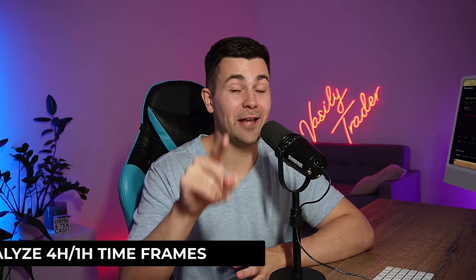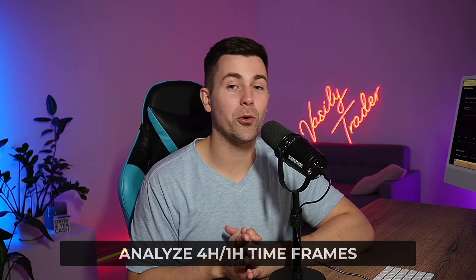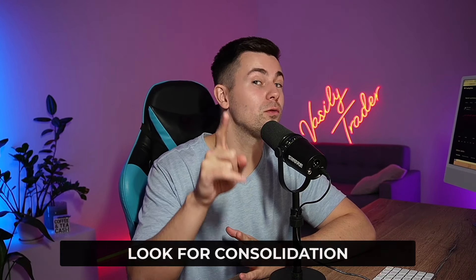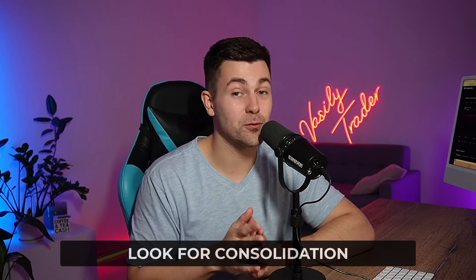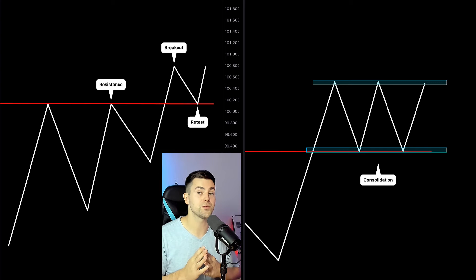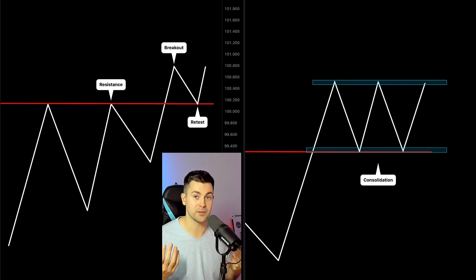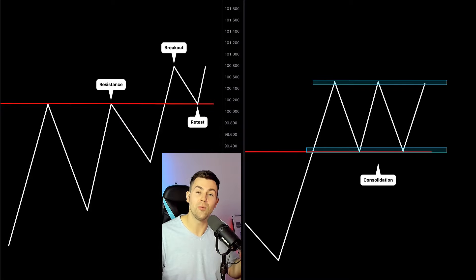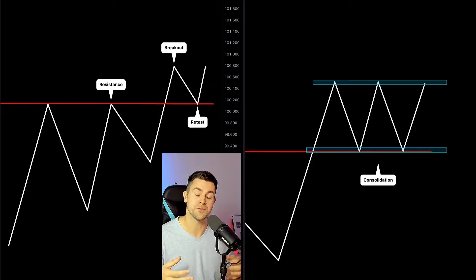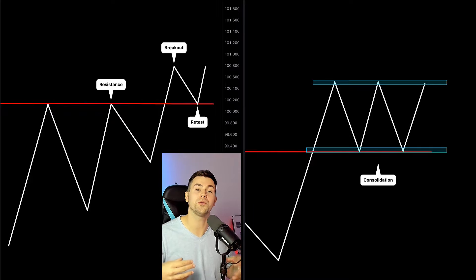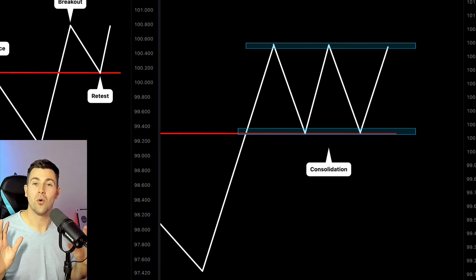Step number four: analyze four-hour and one-hour timeframes and look for signs of consolidation. After breakouts of key levels, markets quite often become exhausted. In order to initiate a new bullish wave, the market needs to accumulate buying orders. Such an accumulation of buying orders makes the market form a range.